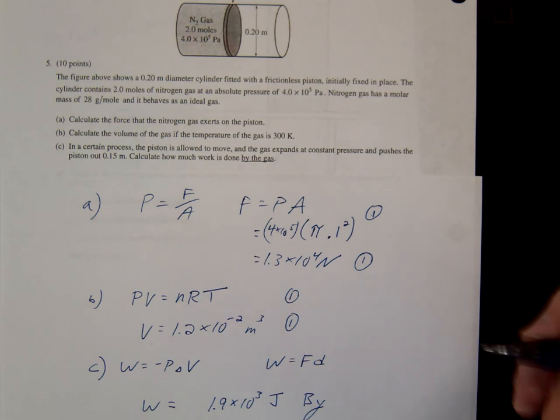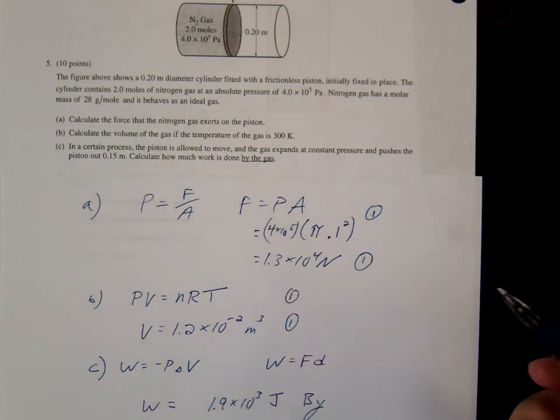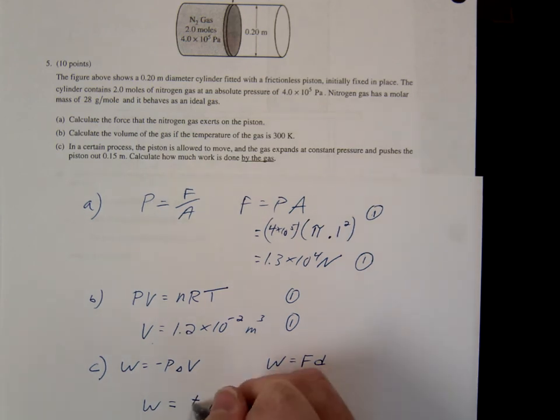Now, one of the things I want you to be careful of, if you were to plug this in, you would have gotten a negative answer, right? That negative answer tells you that it's done by the system. You want to be careful. If you were to write negative by, then that's kind of doing the opposite, right? Negative by means on. So you want to be careful. You should really, if they ask you for by the system, you should just express it as a number and just say by the system.